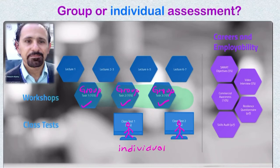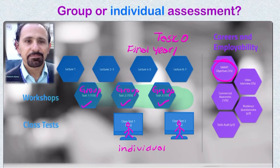Now, your SMART objectives — also known as task 0 — this relates to your final year project. So this is an individual submission, definitely. It relates to your personal final year project, so it's an individual submission.